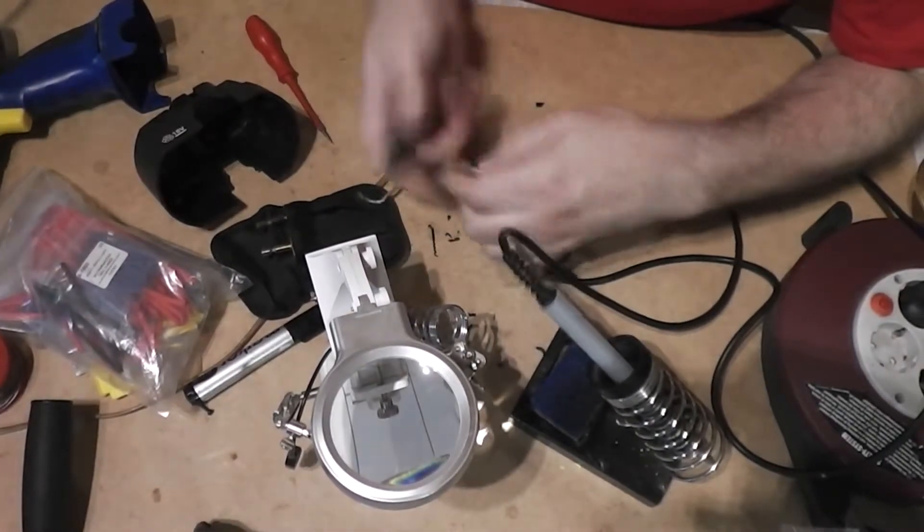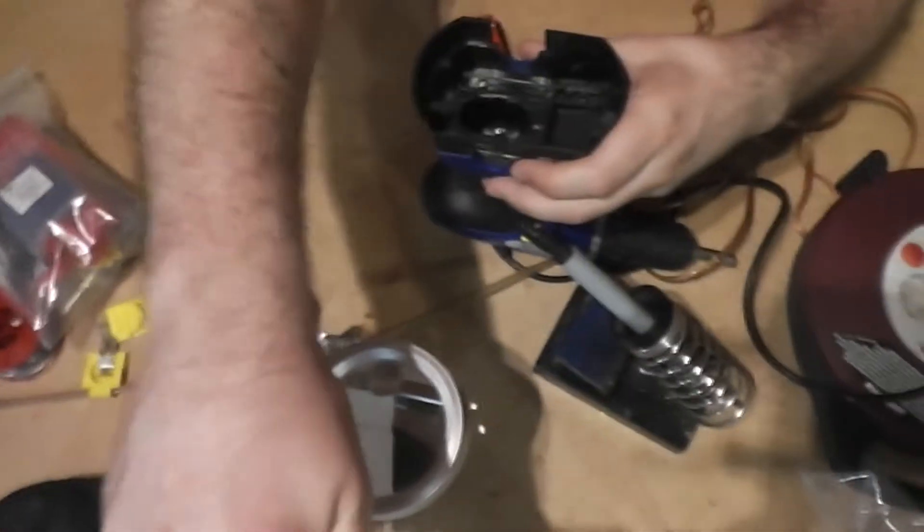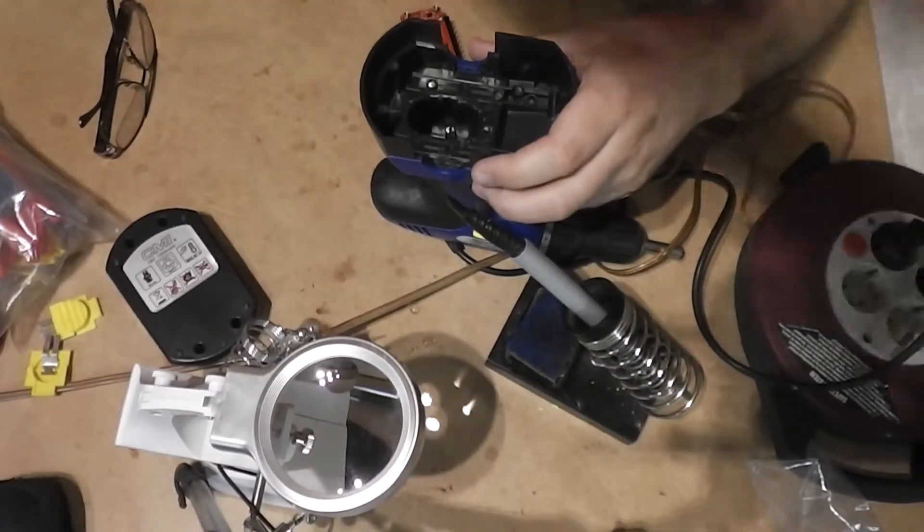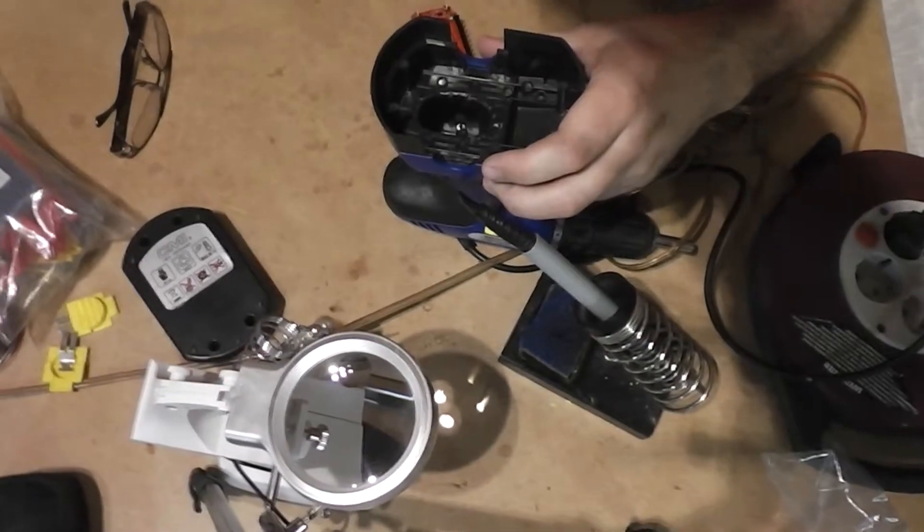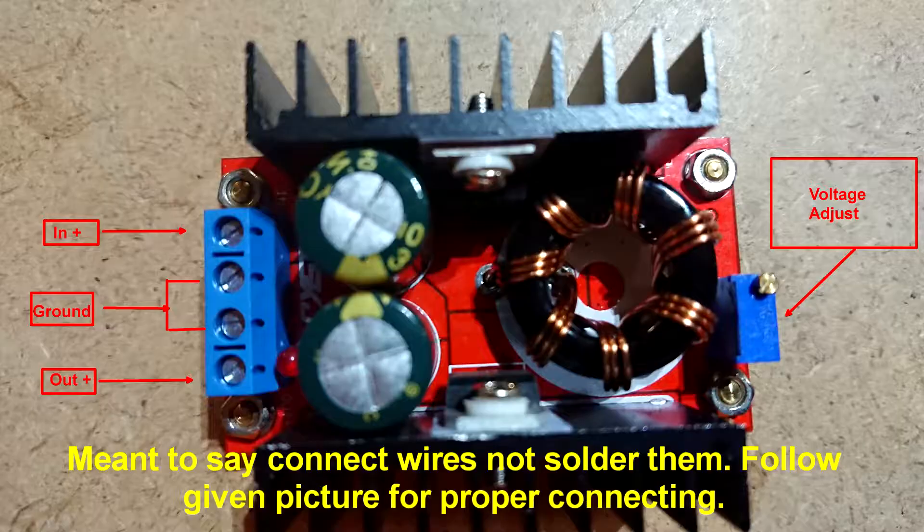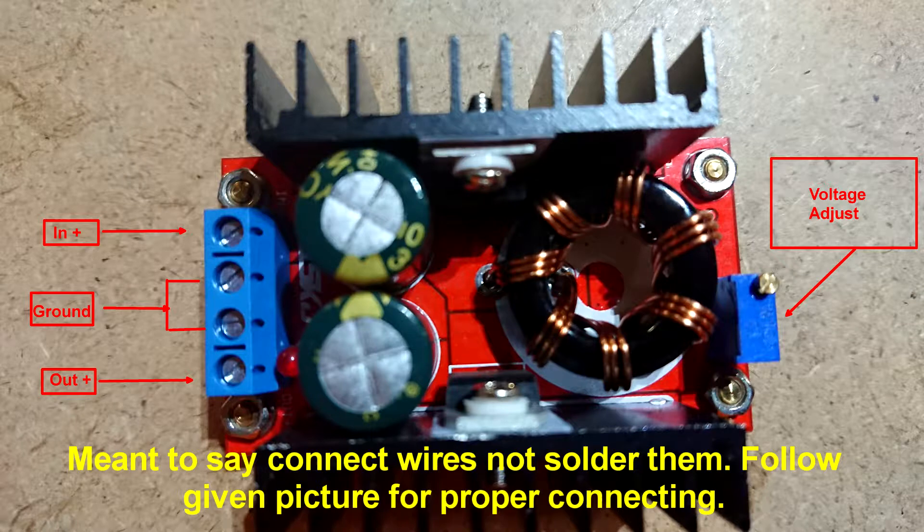First, open the drilling machine, get some wires and soldering iron. Solder wires for input voltage connected to battery.